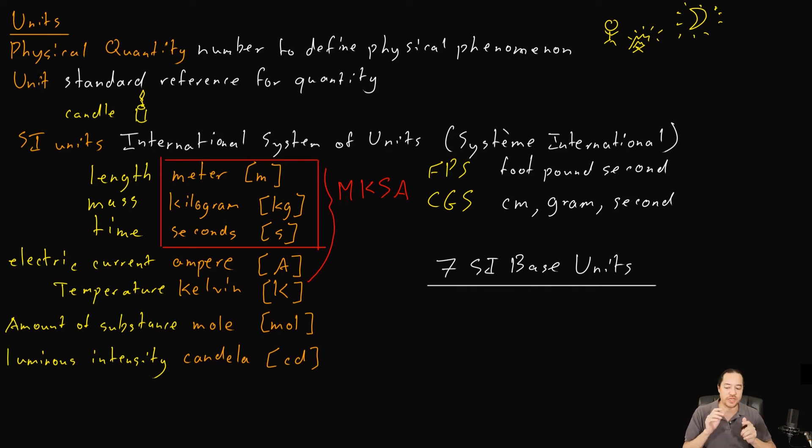Instead of having a manufactured standard candle that we light in order to measure brightness, we define the candela using the way specific wavelengths of light move out of a source. We define other things like meters in terms of the speed of light, which is a universal standard. No matter where you are in the universe, you'll be able to measure the speed of light, and from there you can measure the size of a meter. The same thing with mass and time. Time is measured by having a specific type of atom, and the energy levels oscillate between two different levels in that atom. They oscillate many, many times per second, so once you measure a certain number of those vibrations, you can calculate the length of a second.